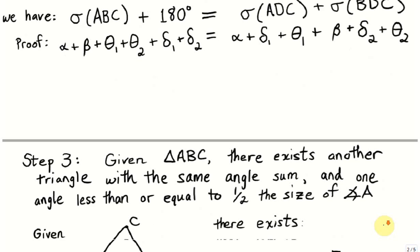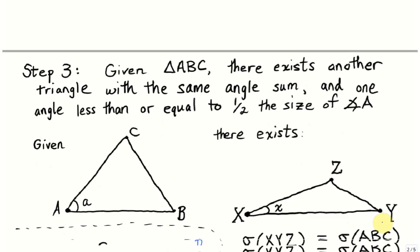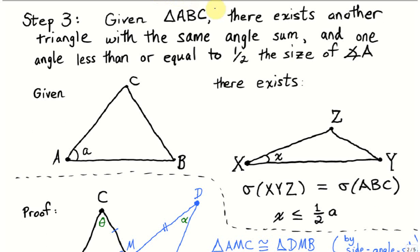Step 3 is more complicated. Given a triangle ABC, we can construct a second triangle with the same angle sum, and furthermore, one of its angles will be less than or equal to half a given angle of the first triangle. That is, given triangle ABC with angle A, we can create triangle XYZ such that the angle sum of XYZ equals the angle sum of ABC, and angle X is less than or equal to half of angle A.